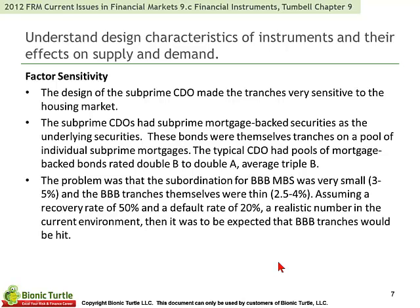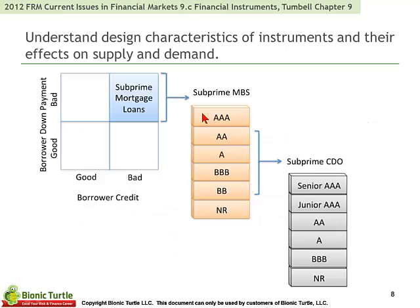Regarding the design characteristics of instruments, the first major topic is factor sensitivity. The design of the subprime CDO makes the tranches very sensitive to the housing market. Subprime CDOs had subprime mortgage-backed securities as underlying securities, and these bonds were themselves tranches on a pool of individual subprime mortgages. A typical CDO had pools of mortgage-backed bonds rated double-B to double-A, or average triple-B. The problem was that the subordination for triple-B and below was very small, and the triple-B tranches were themselves very thin. Assuming a recovery rate of 50% and a default rate of 20%, a realistic number, it was expected that the triple-B tranches would be hit. Here you can see the subprime mortgage-backed securities themselves become collateral for the subprime CDO.